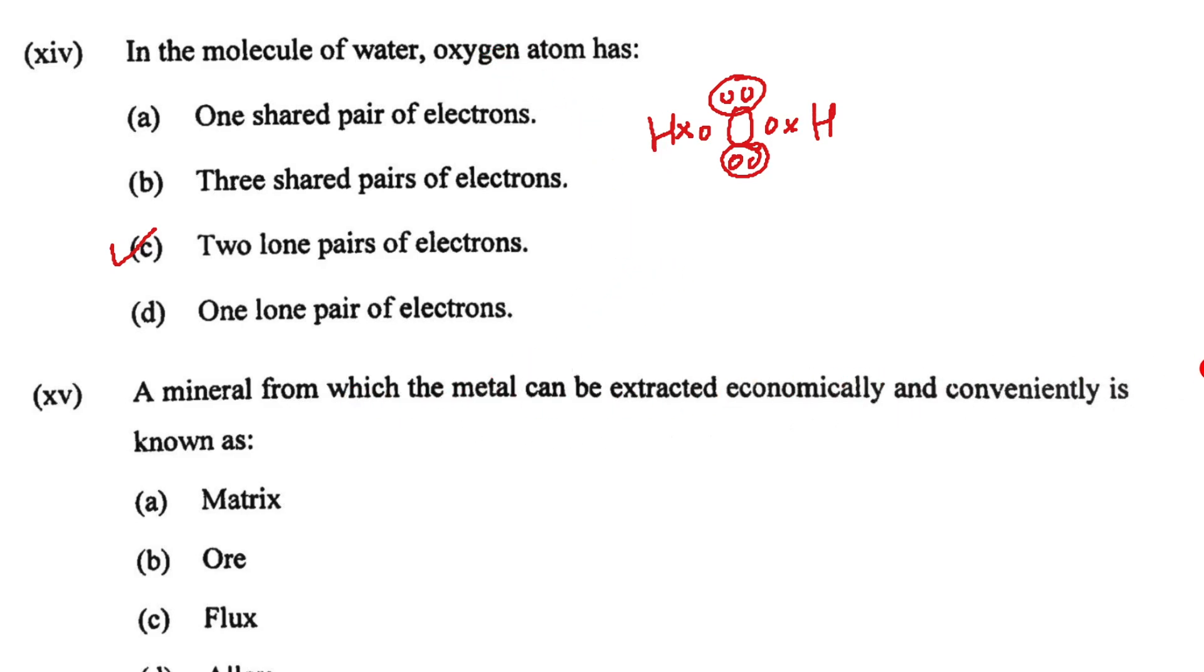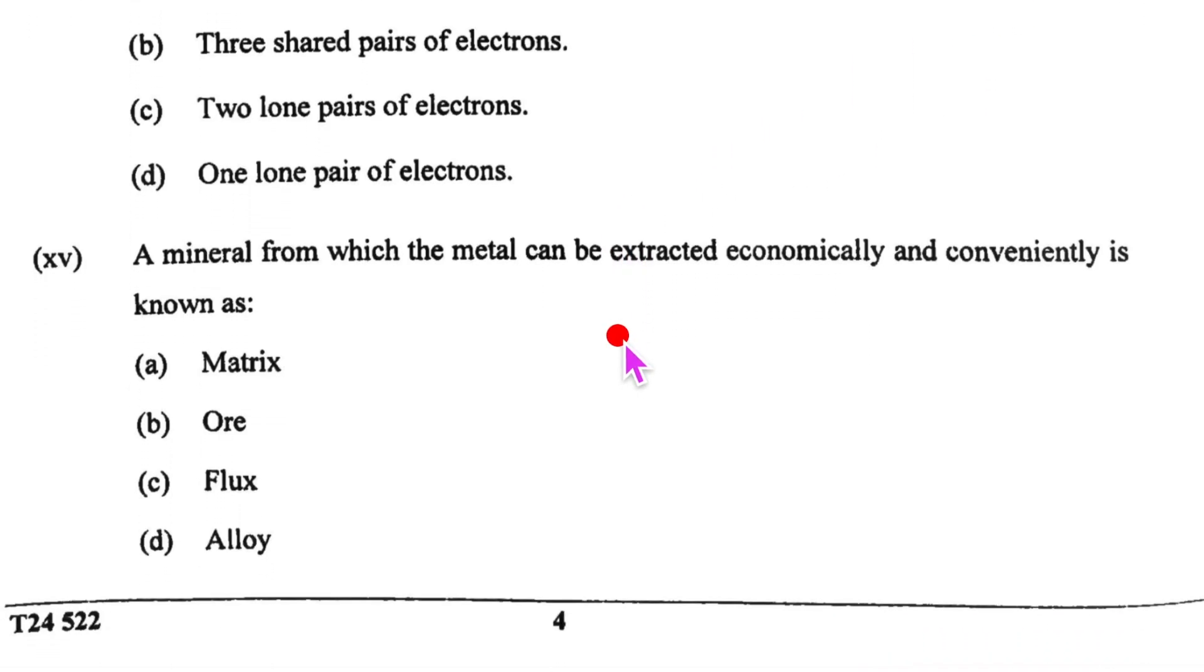We come to now the fifteenth one. The mineral from which the metal can be extracted economically and conveniently is called as the ore. Very simple paper, right?